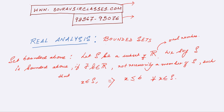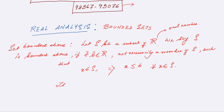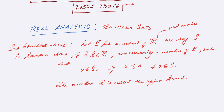The number B is called the upper bound. So every member of S should be less than a number B. And this number B is not necessarily a member of the set S.